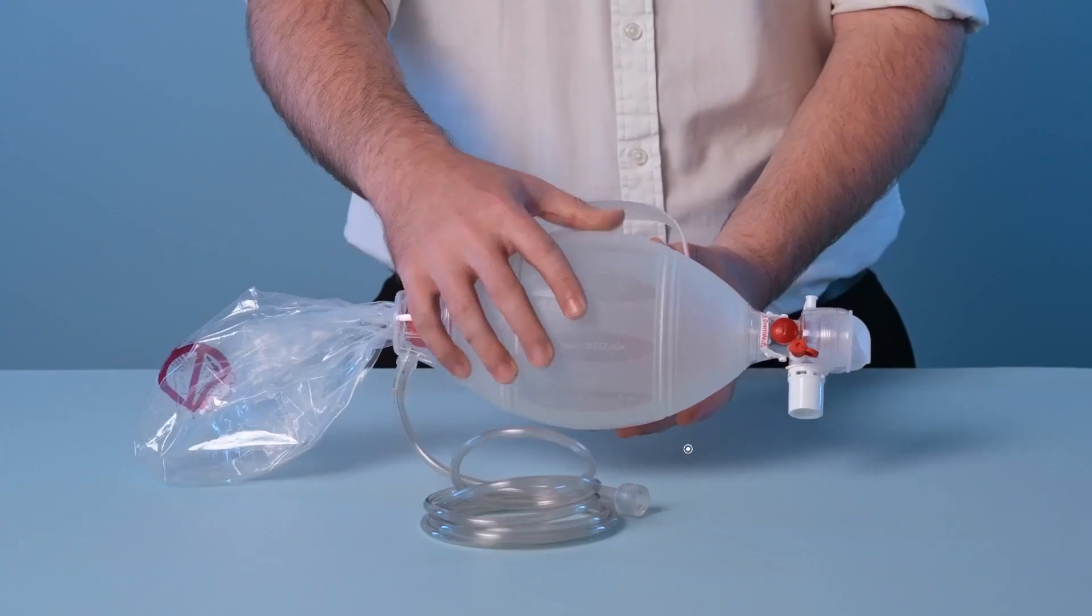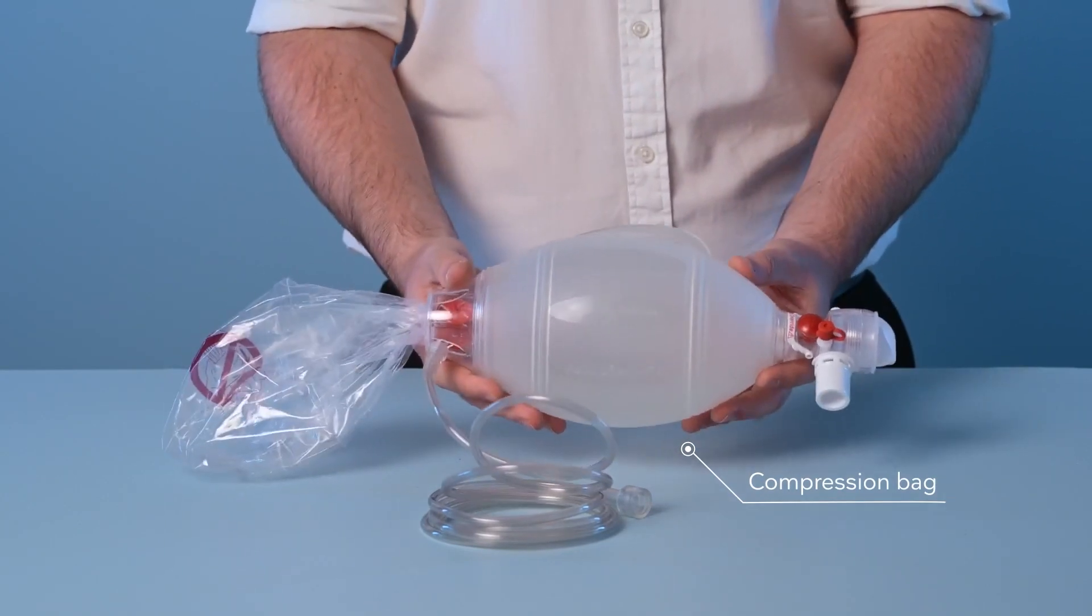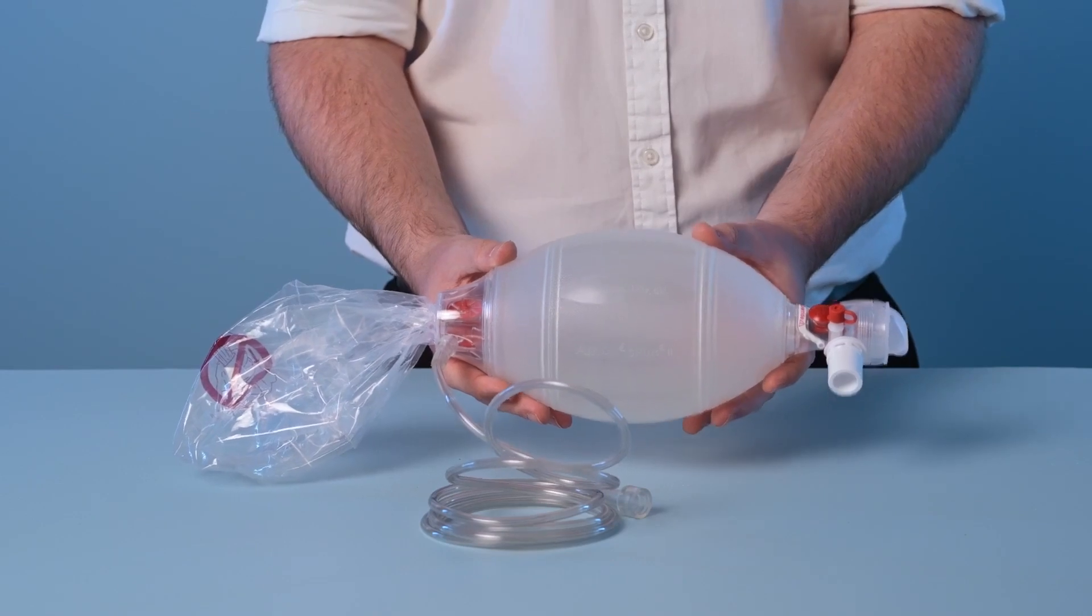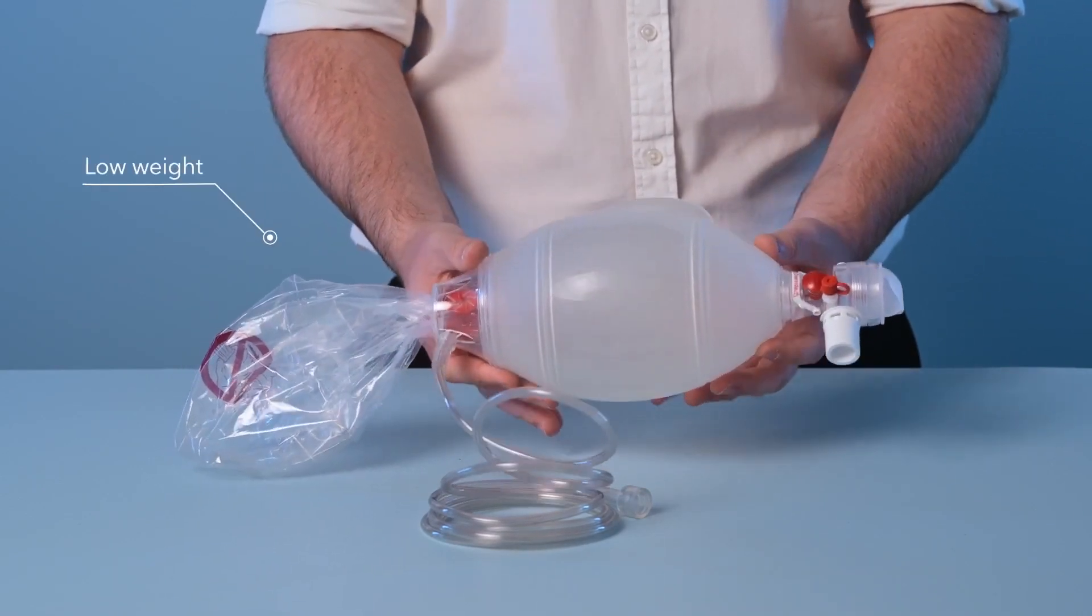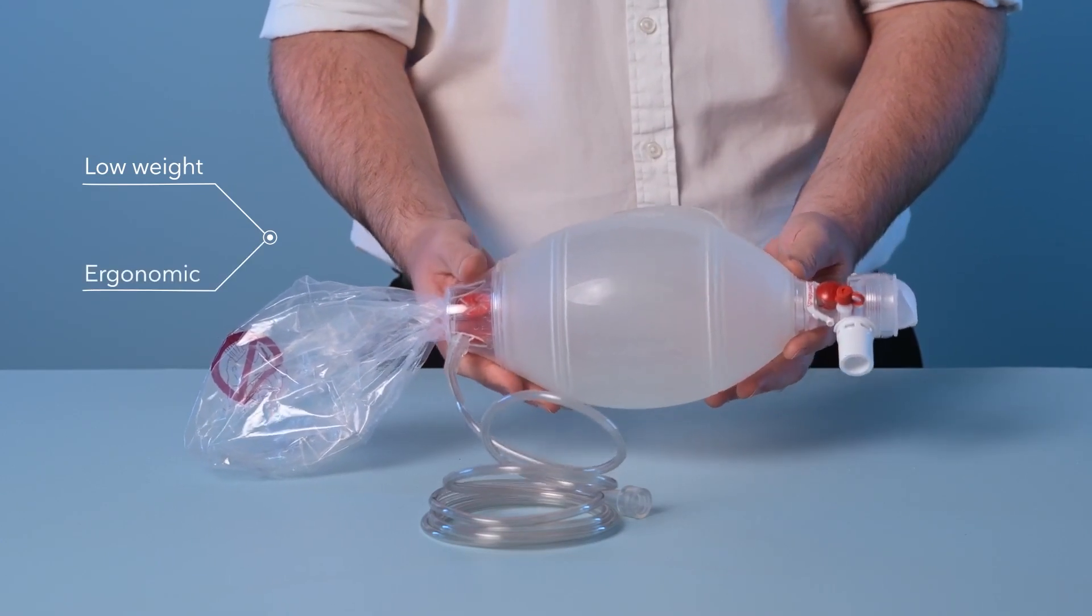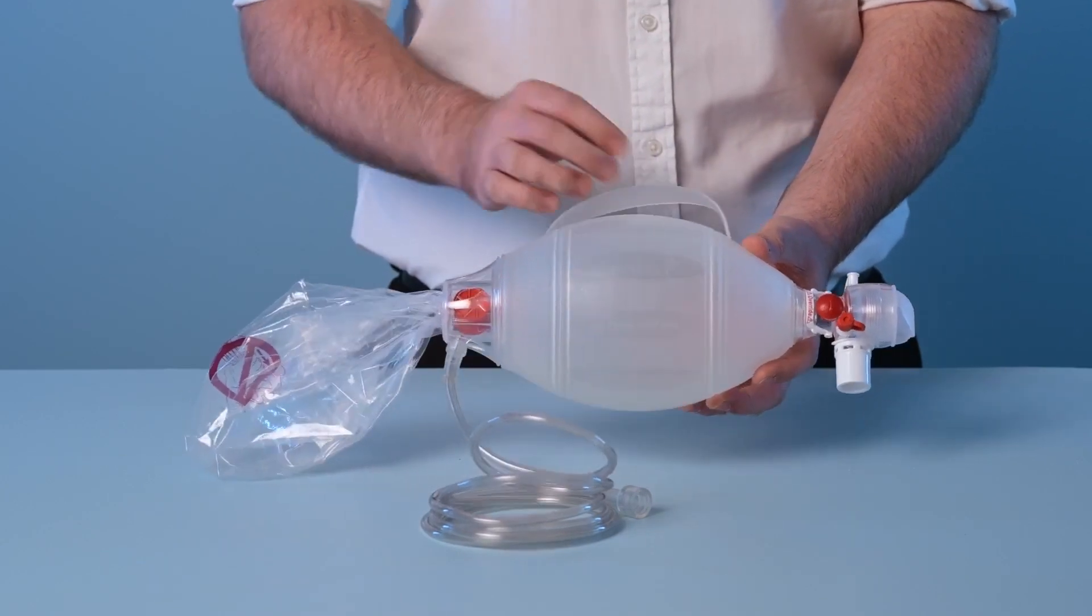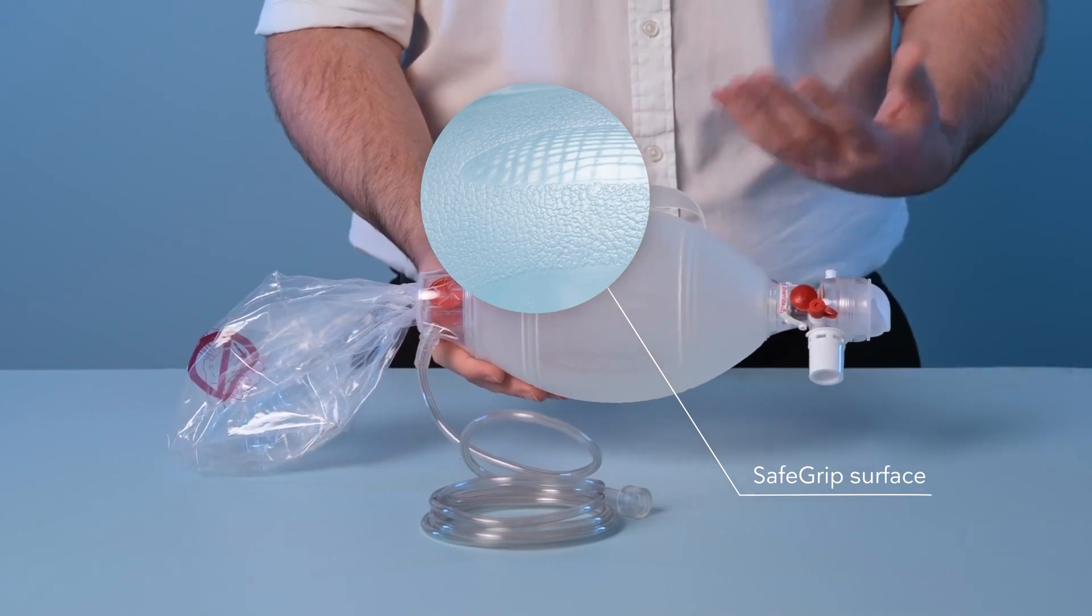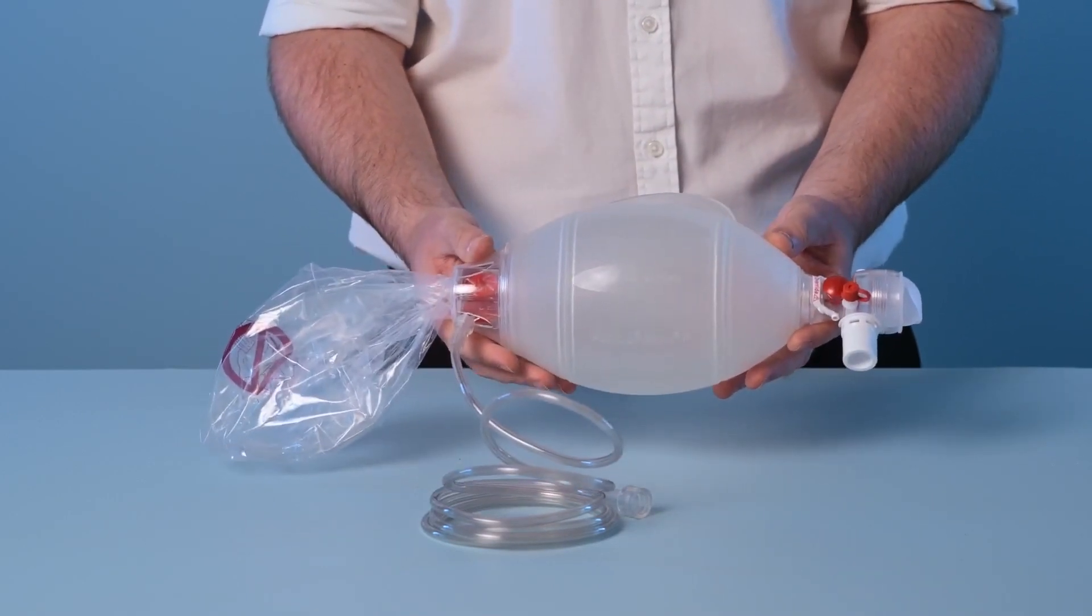Next we have the compression bag. This bag is made from a thin SEBS material and has excellent recoil to support ventilation of the patient. The Spur2 also has a low weight and is designed to be ergonomic. The compression bag features an integrated handle and has a textured safe grip surface, both of which are designed to improve handling of the device throughout prolonged periods of ventilation.